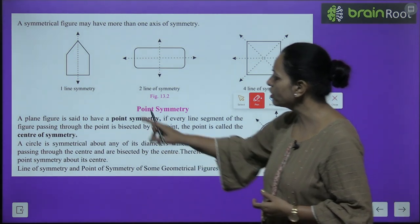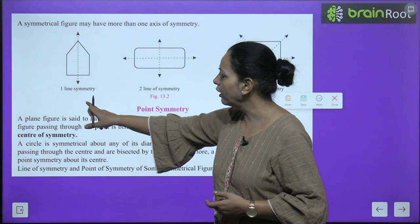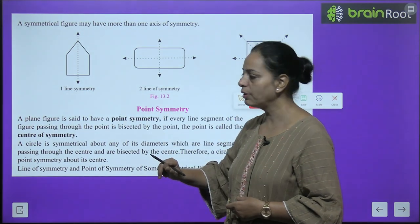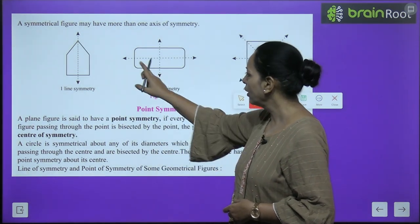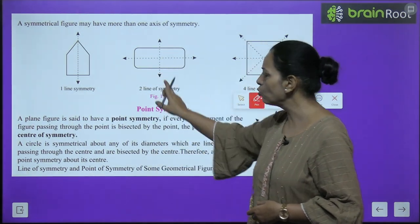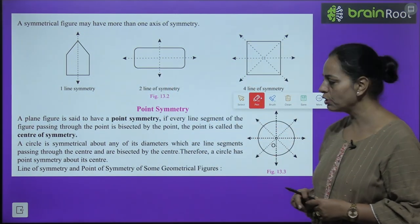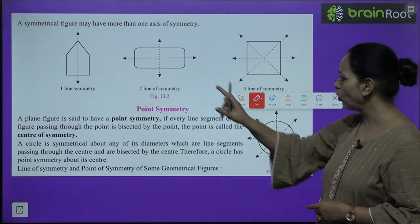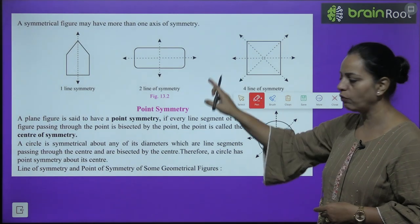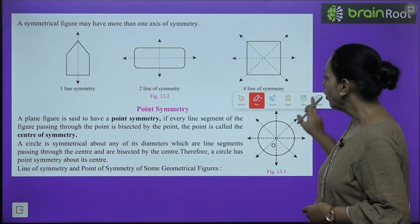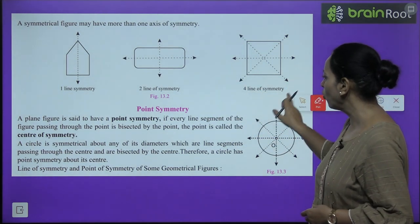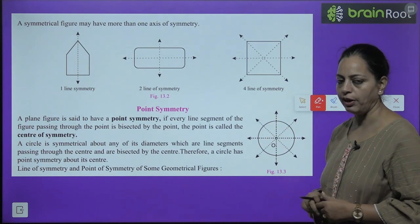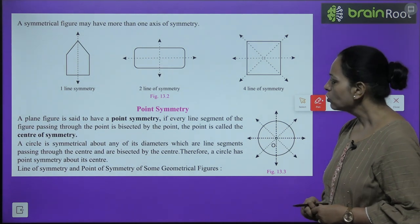The first figure has one line of symmetry. The second has two lines of symmetry — one horizontal and one vertical. And a square has four lines of symmetry.